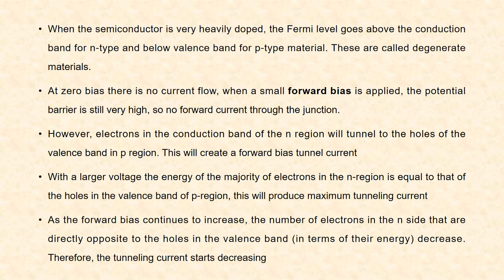If you consider a tunnel diode at zero bias, there is no flow of current. When a small forward bias is applied, the potential barrier is still very high, so no forward current flows through the junction. However, the electrons in the conduction band of n region will tunnel, according to quantum mechanics, to the holes of the valence band in p region. This will create a forward biased tunnel current.